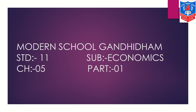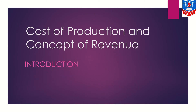Students, it's time to study Economics Chapter 5. The name of the chapter is Cost of Production and Concepts of Revenue. If you go through the heading, you will find that the chapter is divided into two parts: the first part is related to the costing part — cost of production — and the second part is related to the concepts of revenue. Both are very, very important.